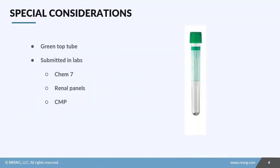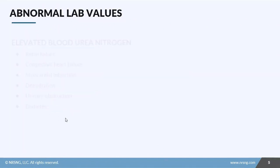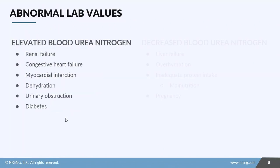When we send the lab off, we're going to send it in a green top tube with your other chemistries. It's a really common lab found in your Chem 7, Chem 10, or your basic metabolic panel. It's also going to be included in your renal panels and your comprehensive metabolic panel, which gives us more in-depth information about what's going on with the patient.